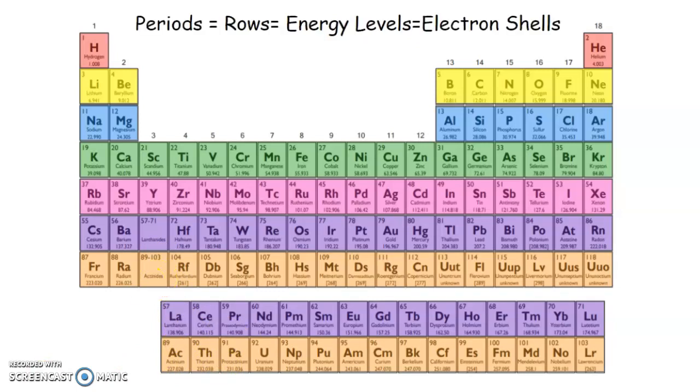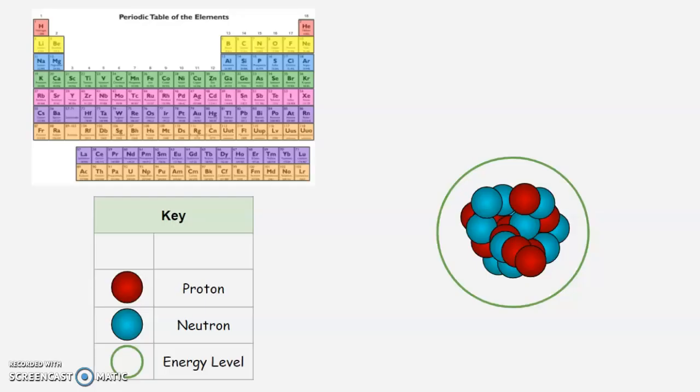We call our rows periods in chemistry, but they also represent the number of energy levels or electron shells. Energy levels and electron shells are just the circles around the nucleus. So for example, hydrogen and helium will only have one energy level or one circle around its nucleus.